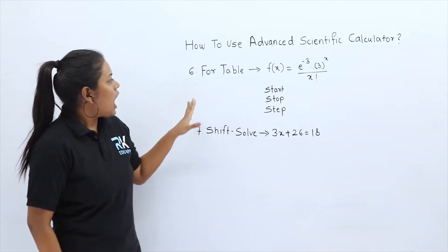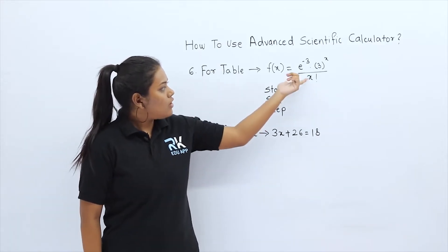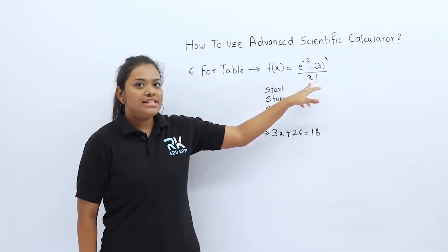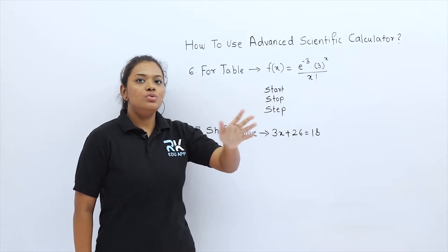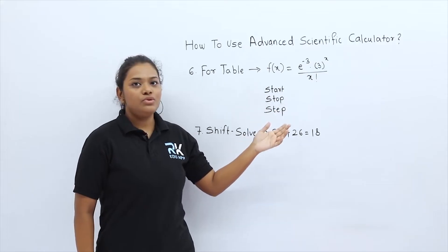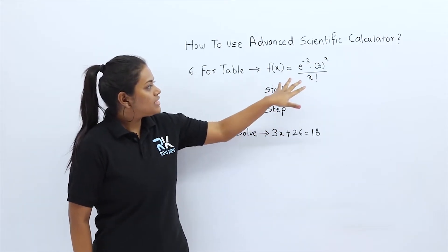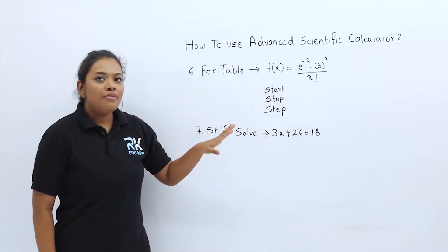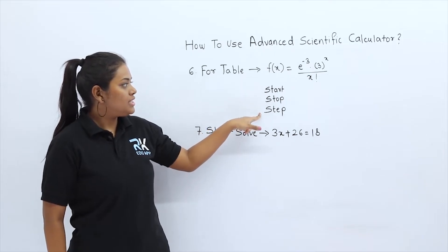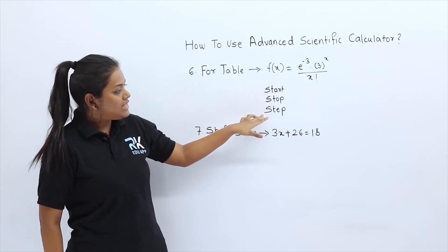Then we will see how to use the table function in the calculator. In the table function we solve a function in which we vary the value of x — for example 1, 2, 3, 4. So instead of solving the function multiple times with different values of x, we use the table function. After loading the function, the calculator gives us three options: start, stop, and step.